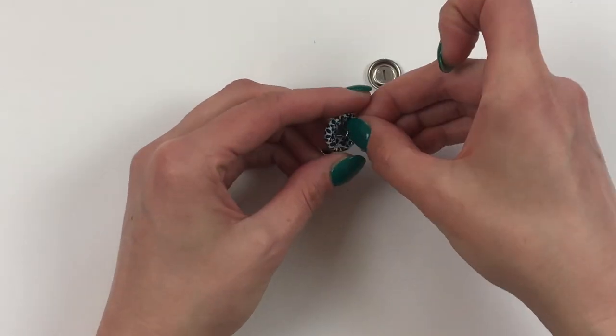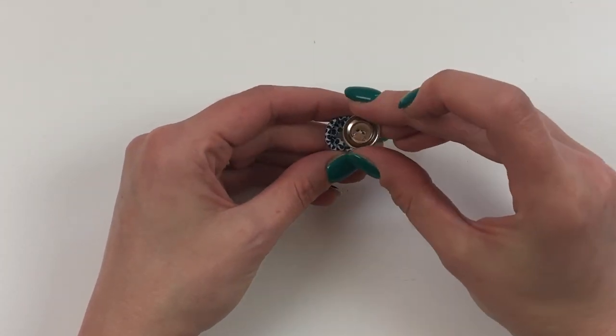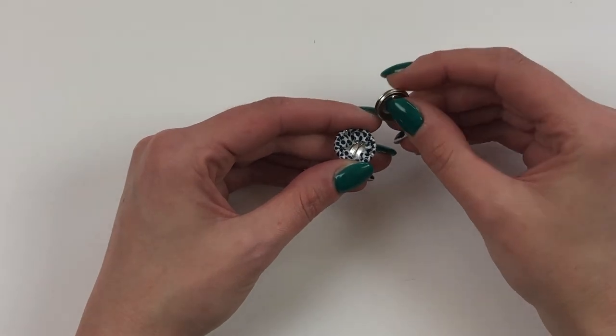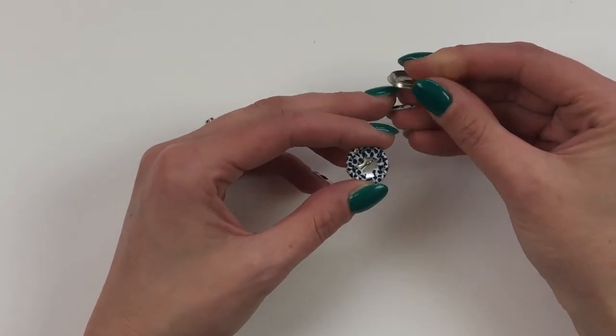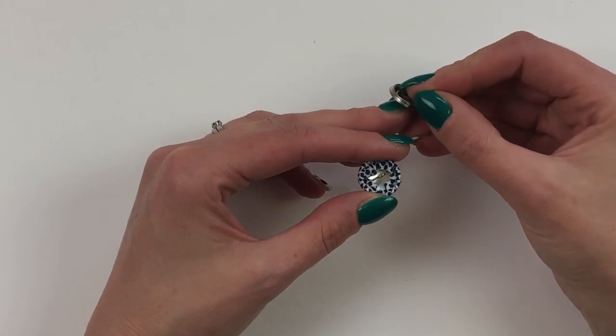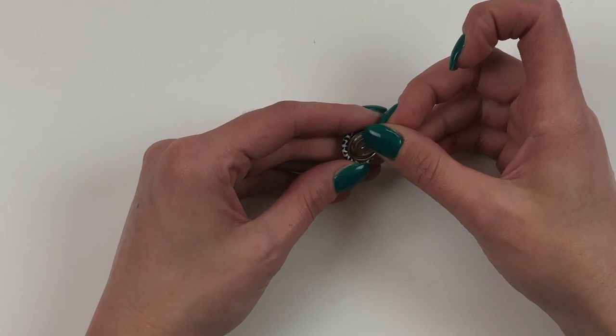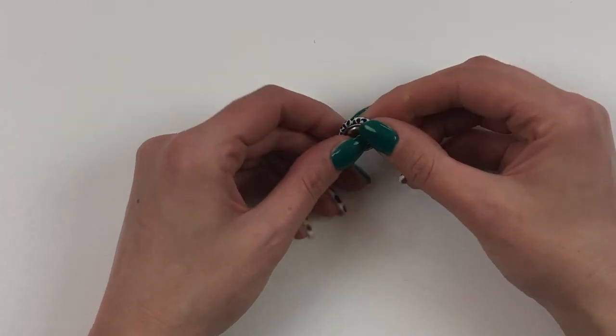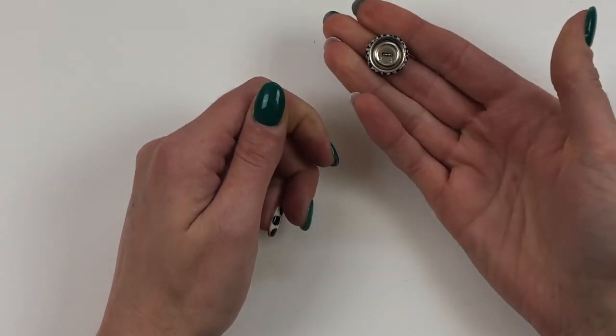And then once you've done that all the way round, take the back of the button, make sure you place it the right way up so you're placing it so that the flat side is going to be facing up and the slight rim here is going to go inside. Place that on the top and just squeeze it until it snaps into position and there you go.